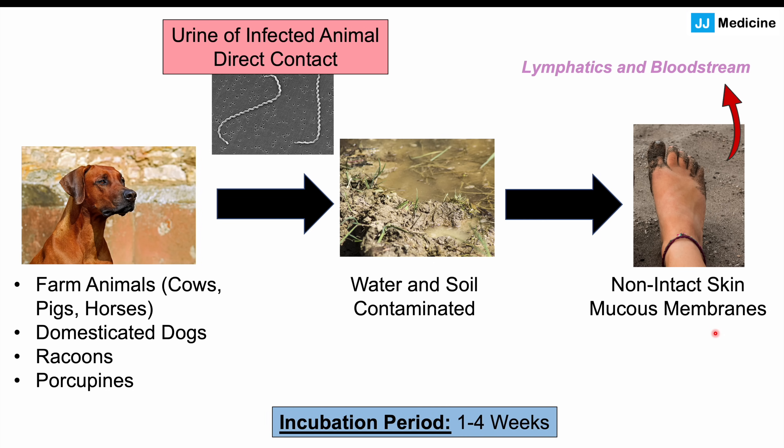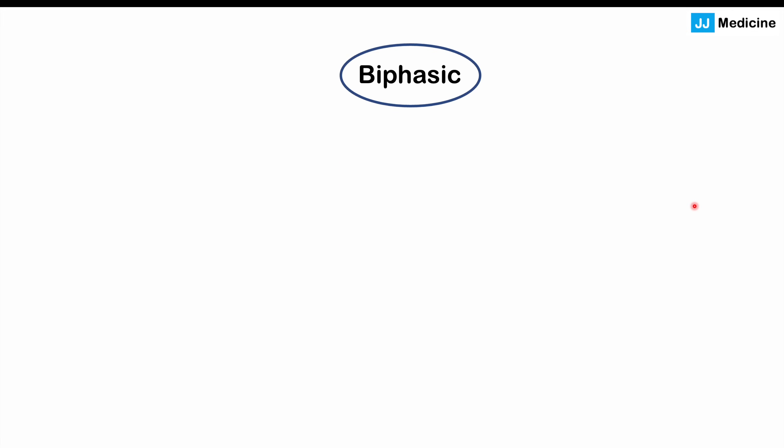Once an individual is infected — whether through broken skin or mucous membranes — the bacteria enter the bloodstream. It takes about one to four weeks before symptoms appear; that is the incubation period. On average, one to four weeks, though it can occur as early as two days in some cases.